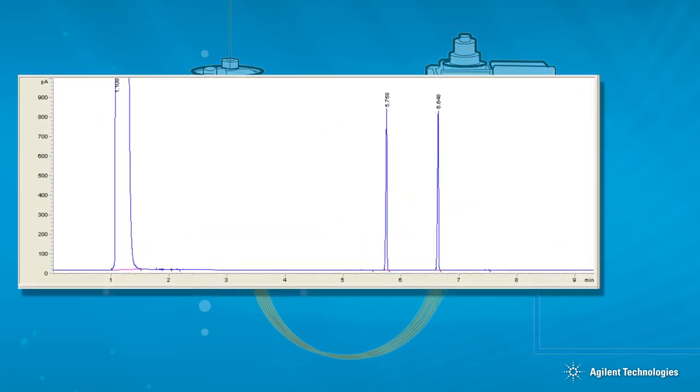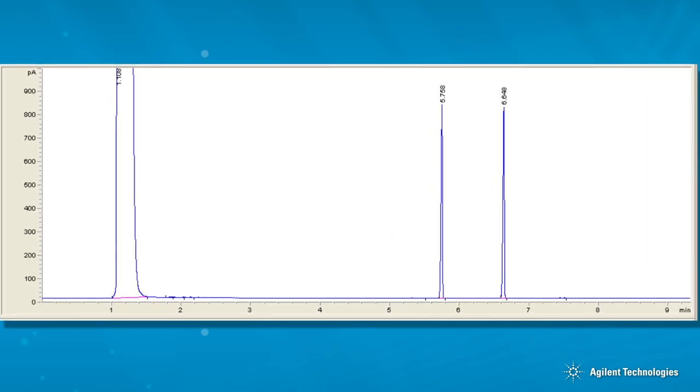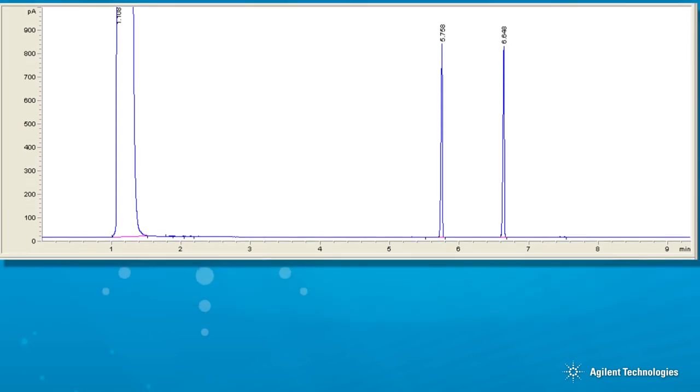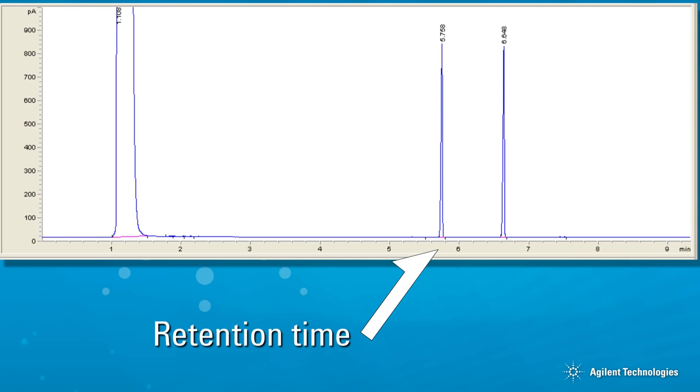As the temperature program continues, each peak elutes from the column and is detected. The chromatogram, which is the graphical representation of the sample elution and response, is complete. Each peak is identified by the specific time that it leaves the column and passes through the detector. This is called the retention time.